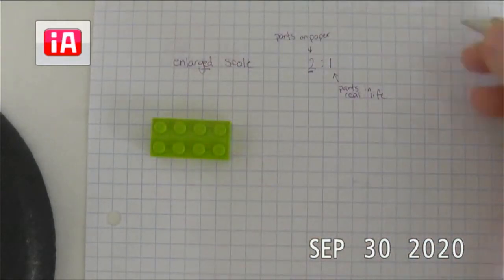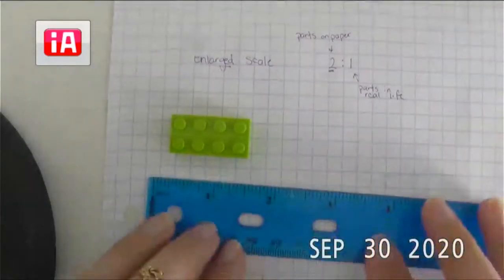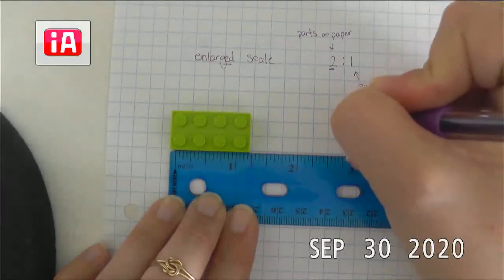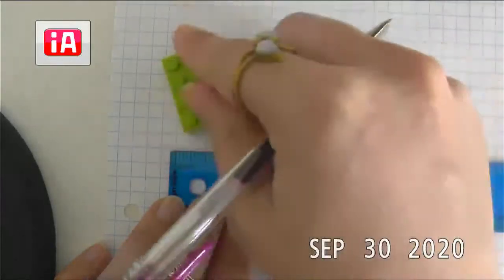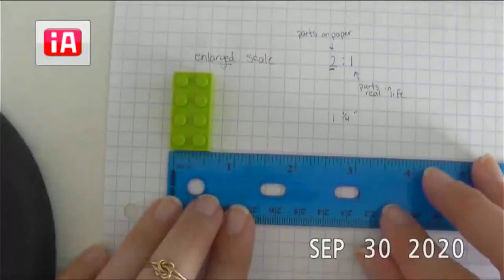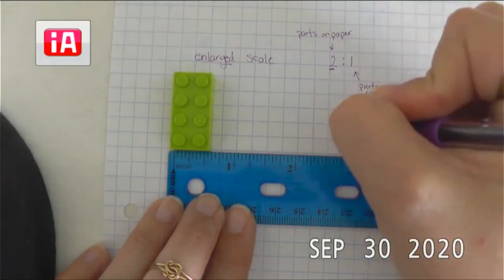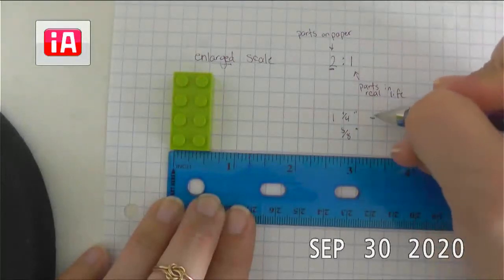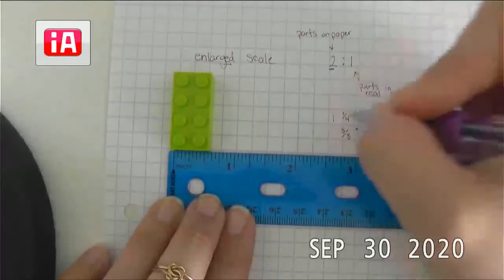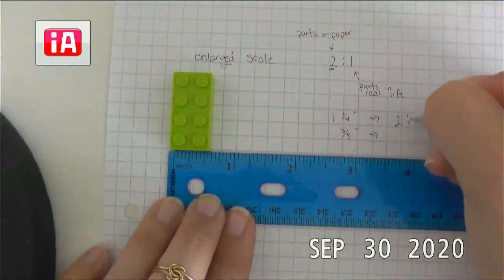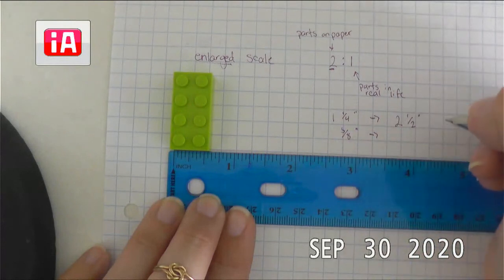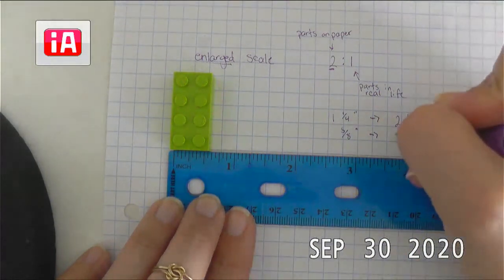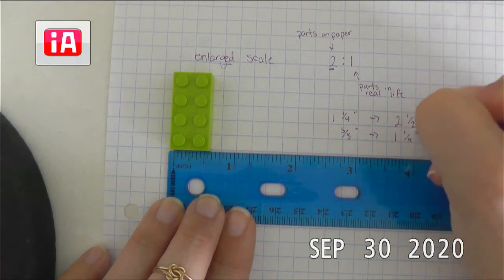If we remember back our measurements from the first time, looking at our Lego, it is one and one-quarter inches long and five-eighths of an inch wide. So knowing that we are going to represent these real-life parts twice as large, we can double those numbers. So this becomes two and one-half inches. And this becomes one and one-fourth.